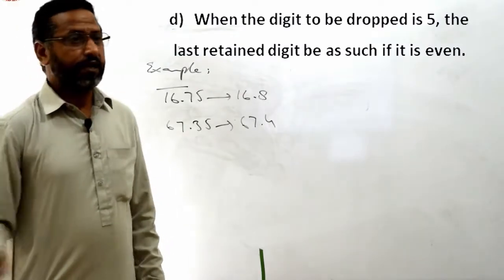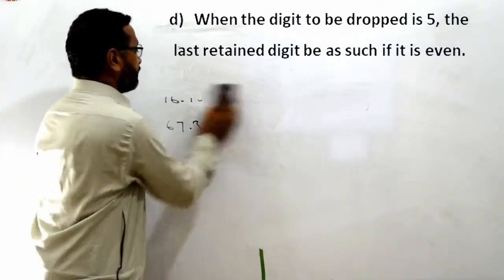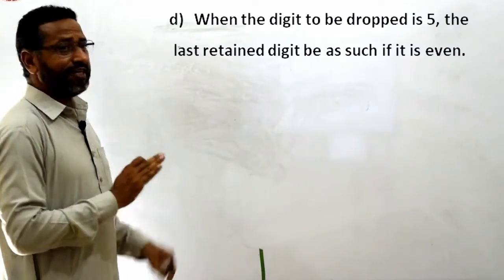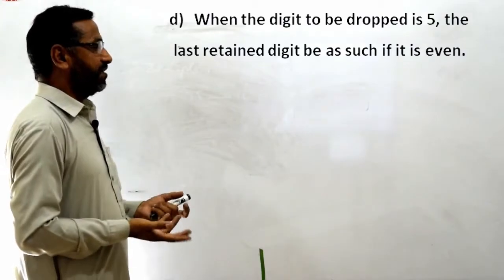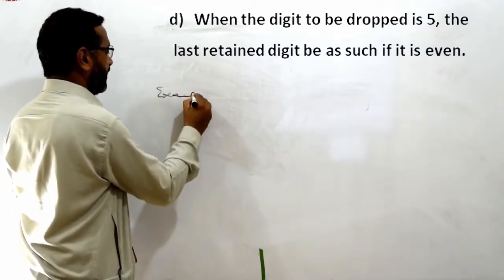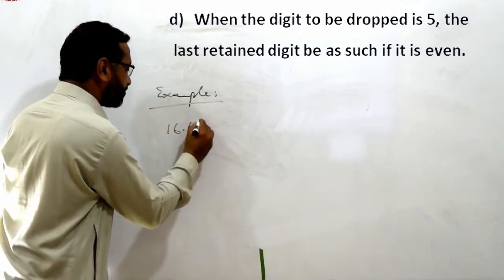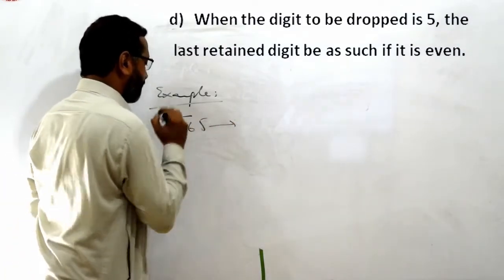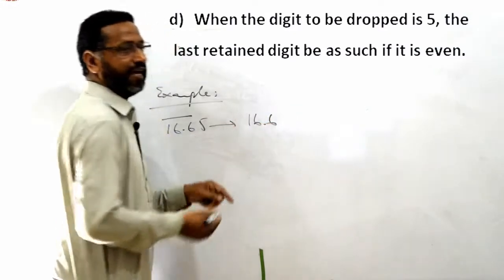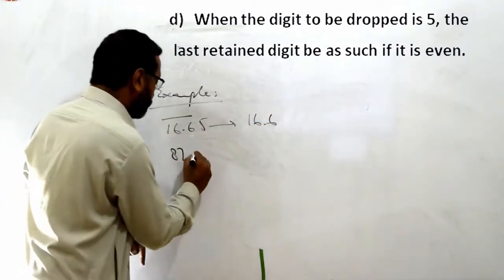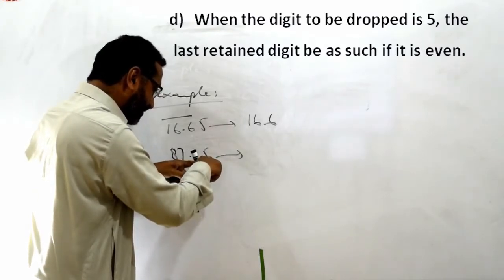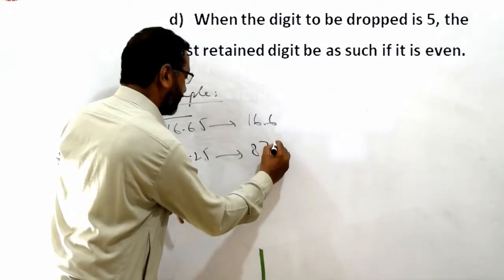Rule D: When the digit to be dropped is exactly 5, the last retained digit remains as such if it is even. وہ ایسے ہی رہے گا اگر even ہے. Example: 16.65 — 5 کو drop کریں، 5 سے پہلے 6 ہے، 6 even ہے، اس لیے 16.6 ہی رہے گا. اسی طرح 87.25 — 5 کو drop کریں، 2 even ہے، تو same رہے گا: 87.2.